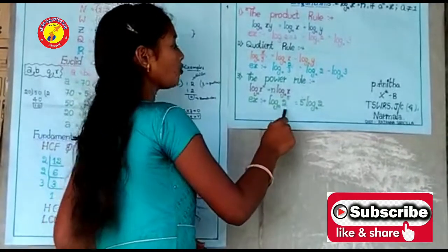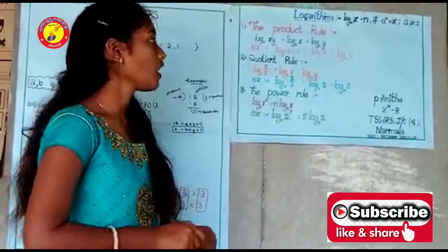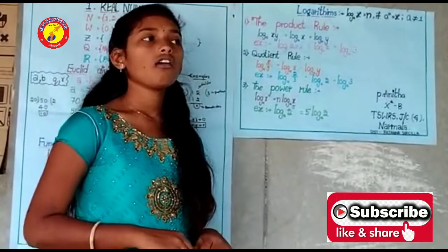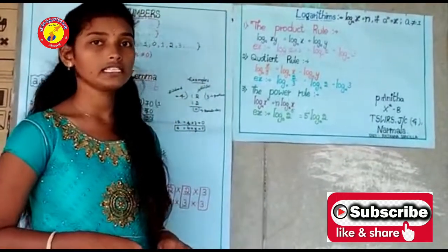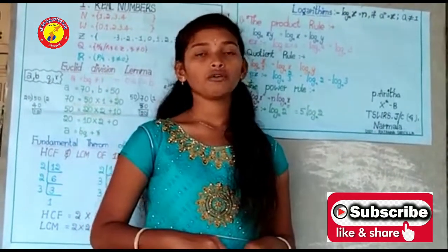Example: log(2^5) = 5×log(2). In daily life, logarithms are used in mathematics, engineering, and business calculations. Thank you for giving this wonderful opportunity. Stay home, stay safe.